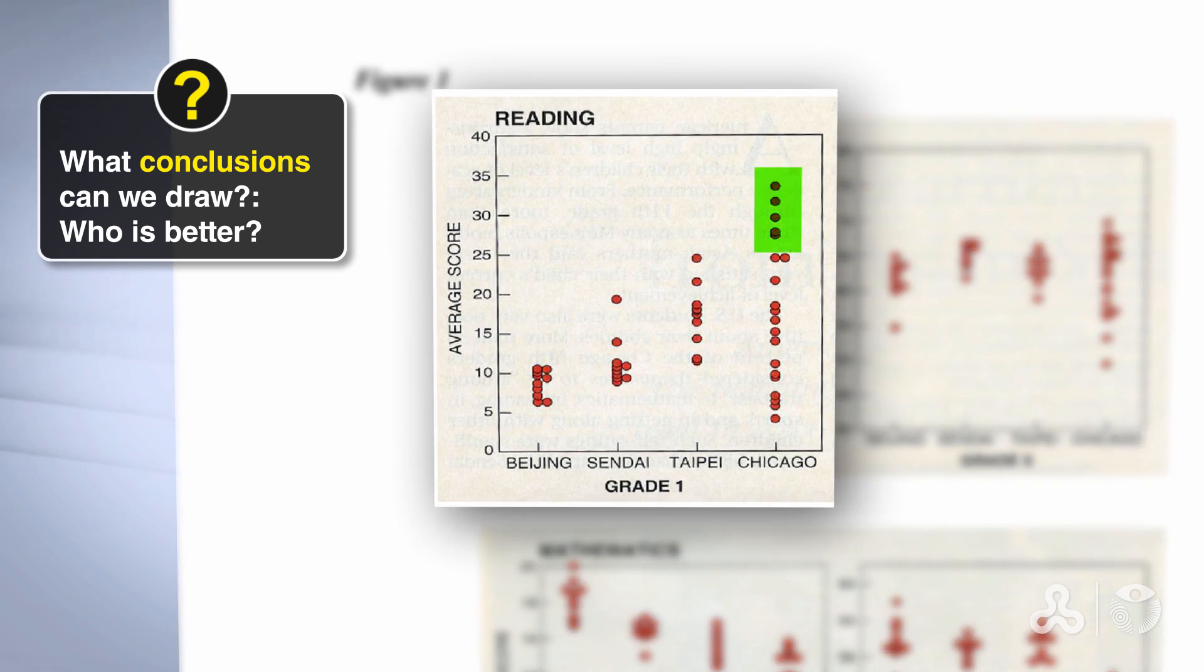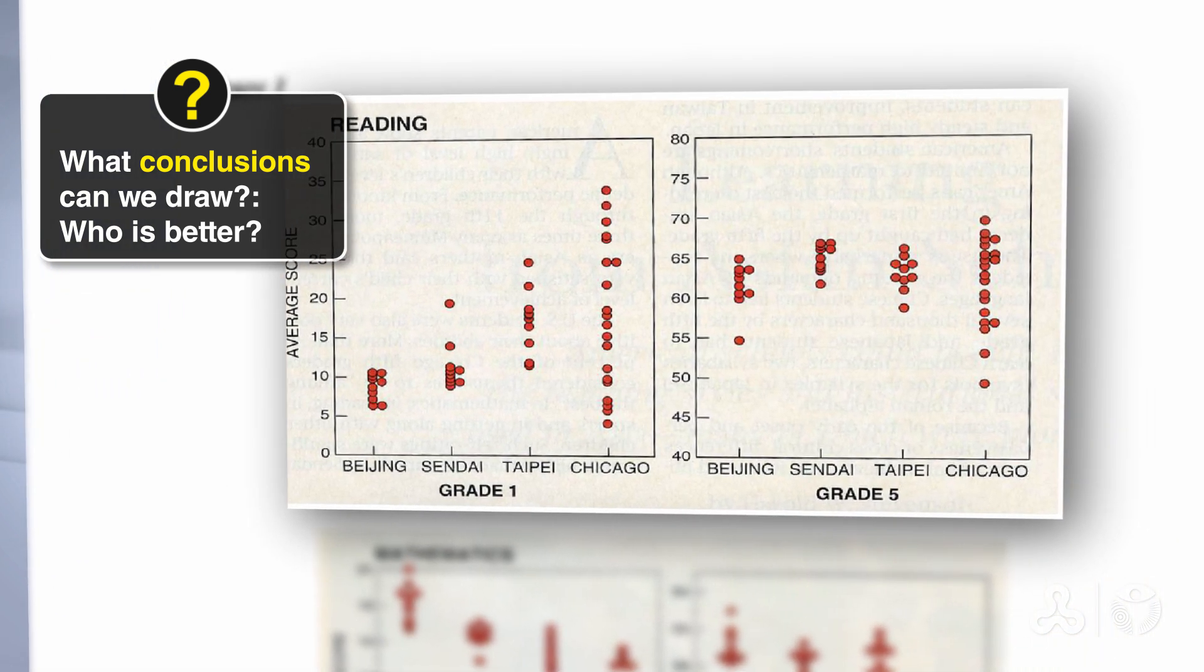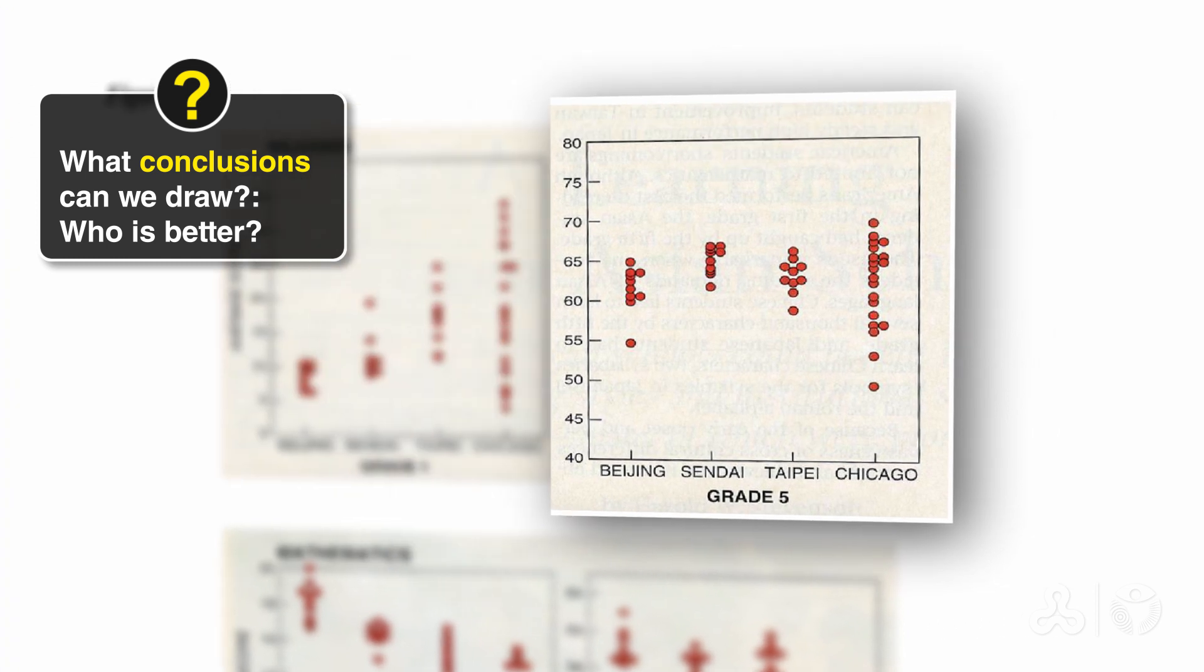So we see that some of the schools in Chicago are better than some of the schools in Asian cities, but some schools are worse. What happens in the fifth grade? The differences aren't as big anymore. The gaps are smaller. Some Chicago schools are doing much worse than the Asian schools.